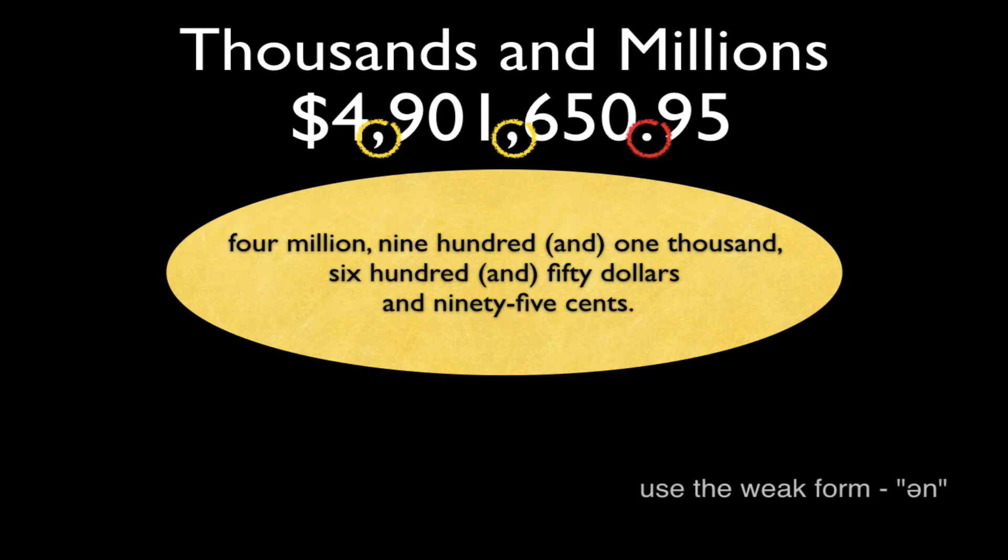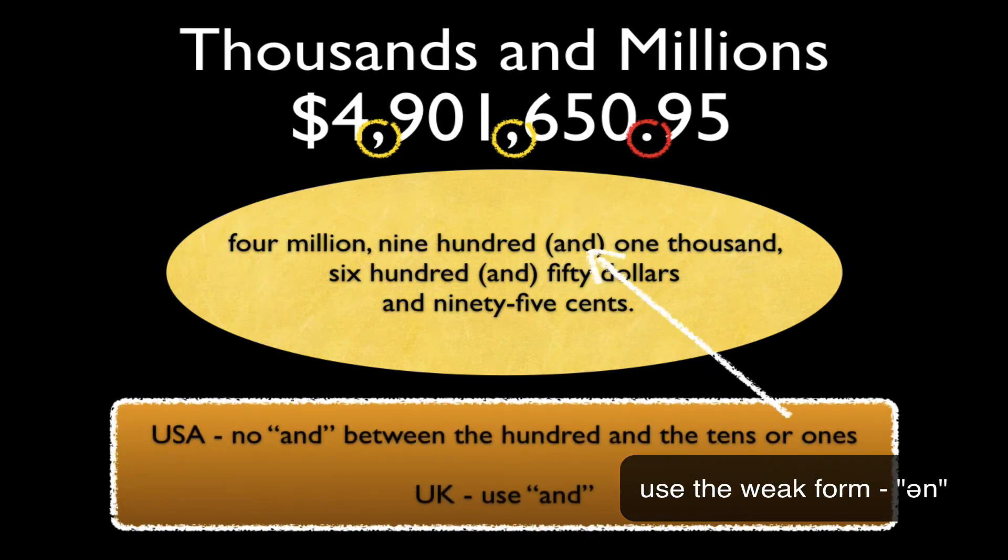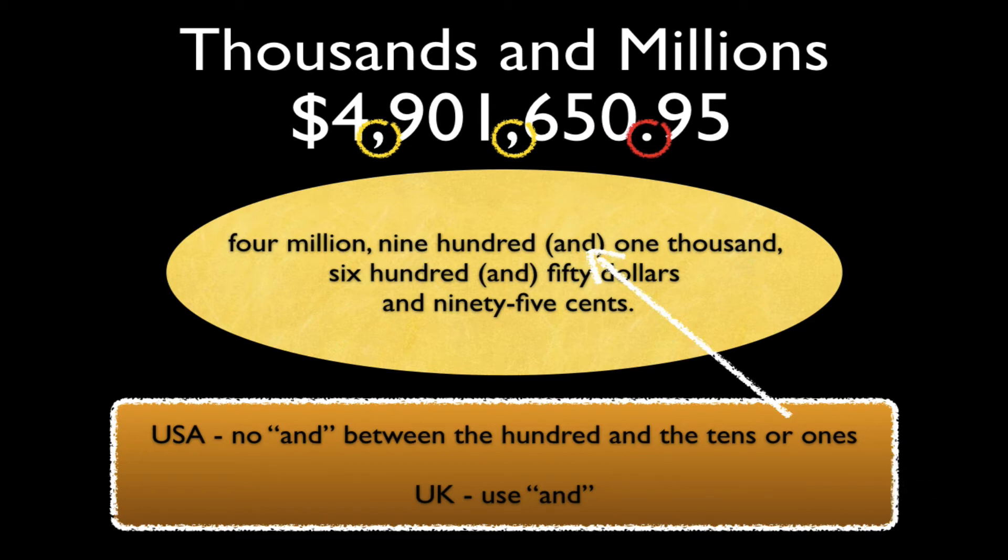Remember, and is usually weak. It's more like 'n'. But in American English, they usually leave out and between the hundred and the tens or ones. So they might say four million, nine hundred and one thousand, six hundred fifty dollars and ninety-five cents. In the UK, people usually use and.